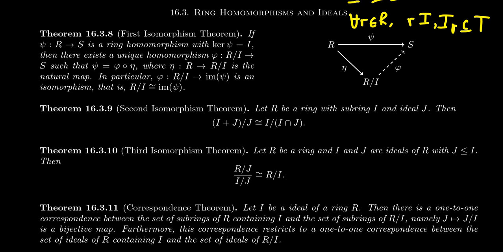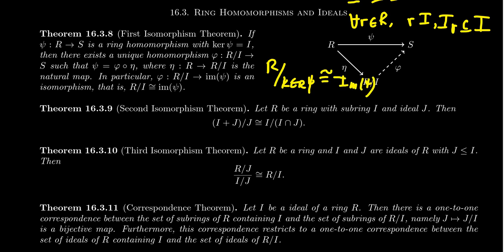So with that in mind, phi forms an isomorphism between R mod I and the image of psi. Because psi might not be an onto map, but whatever the image turns out to be, phi forms an isomorphism between R mod I and the image of psi. Much like with the first isomorphism theorem for groups, we often write this as R mod the kernel of psi is isomorphic to the image of psi. In a nutshell, that is what the first isomorphism theorem tells us: R mod I is isomorphic to the image.